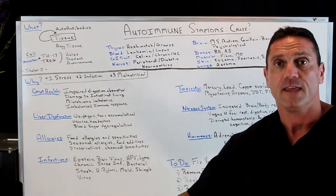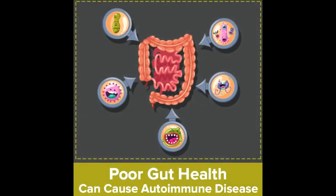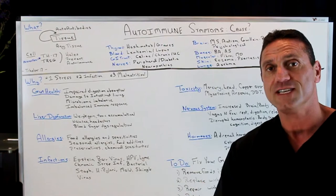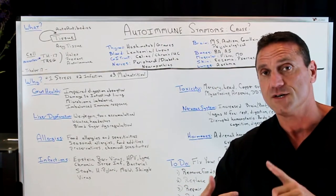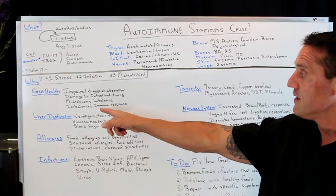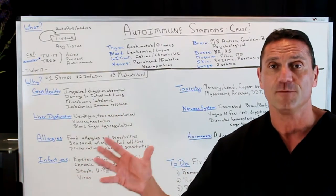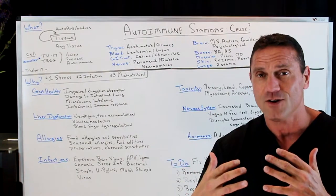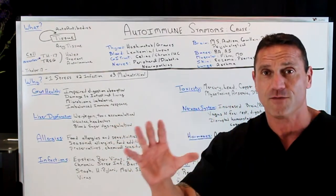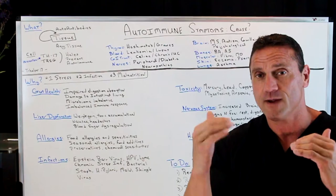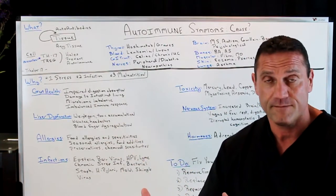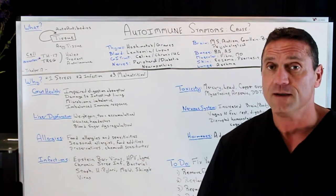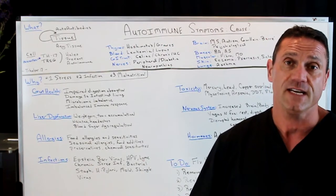Like for your gut health — if you have poor gut health, what's going to happen? Impaired digestive absorption, damage to the intestinal lining, leaky gut, Crohn's disease, ulcerative colitis. You're going to have a microbiome imbalance. Our body wants a nice microbiome, which is the normal flora to help regulate all the homeostasis, which creates an imbalanced immune response. 80% of your immune system is in your gut.